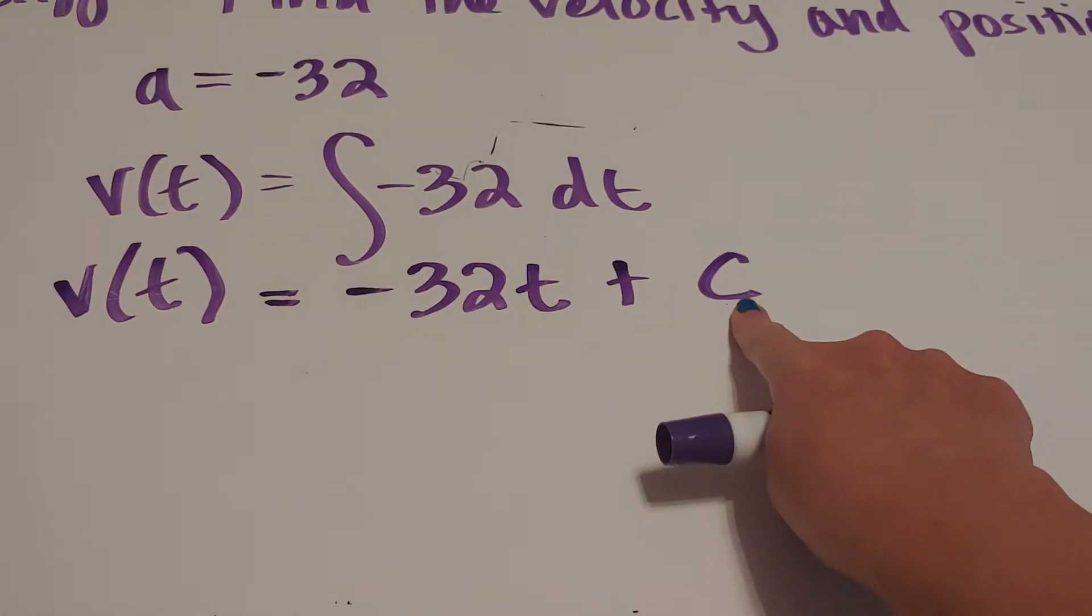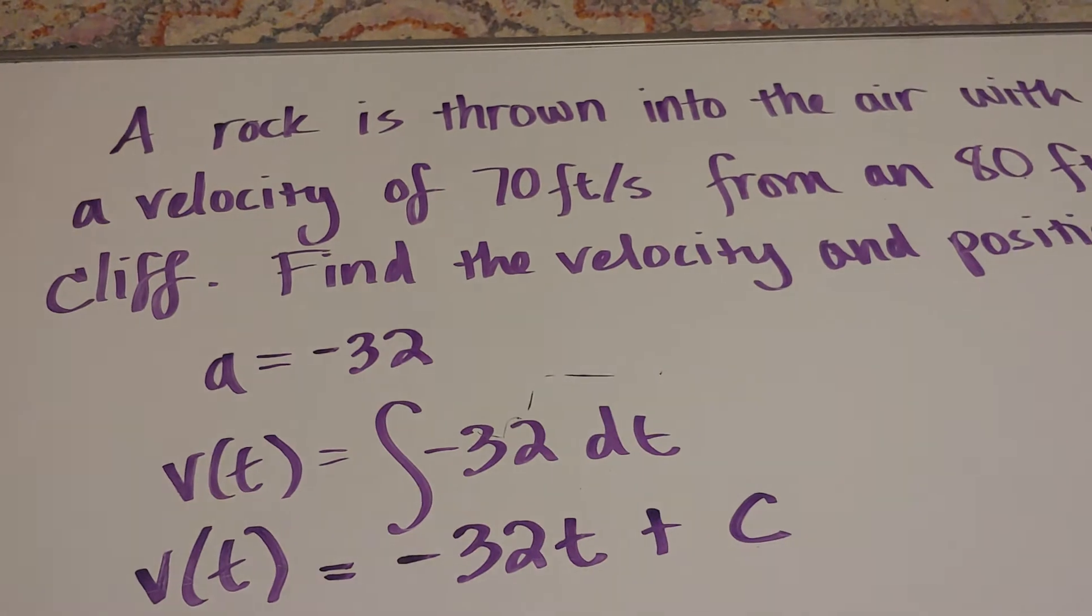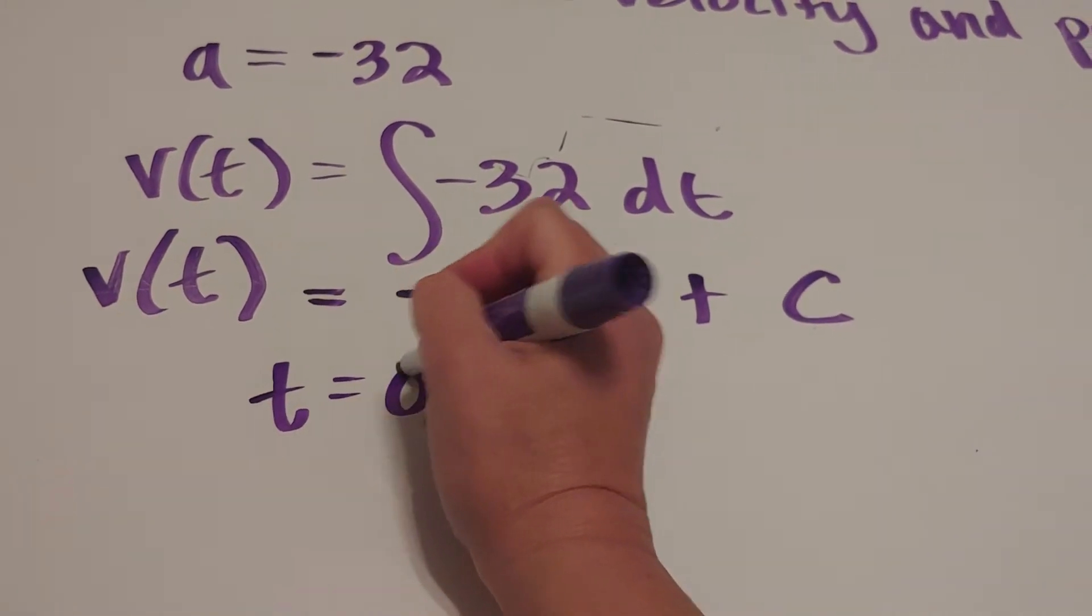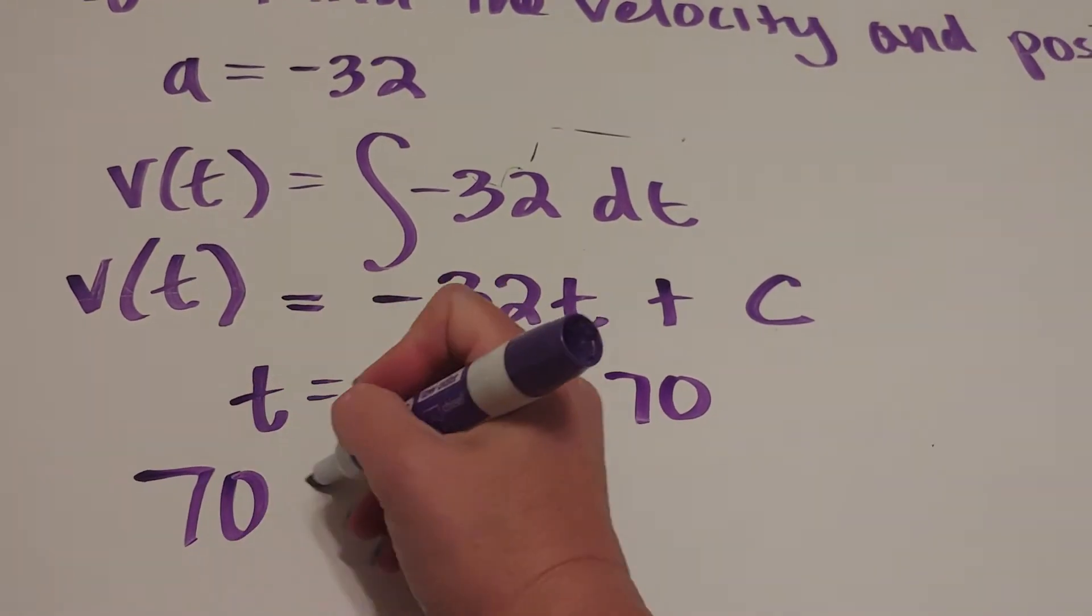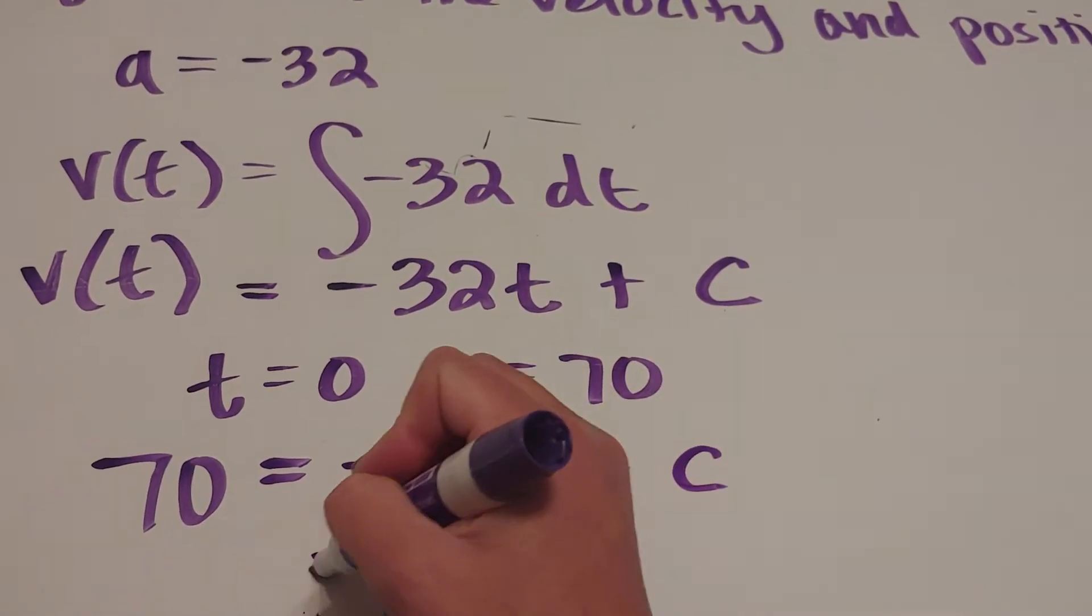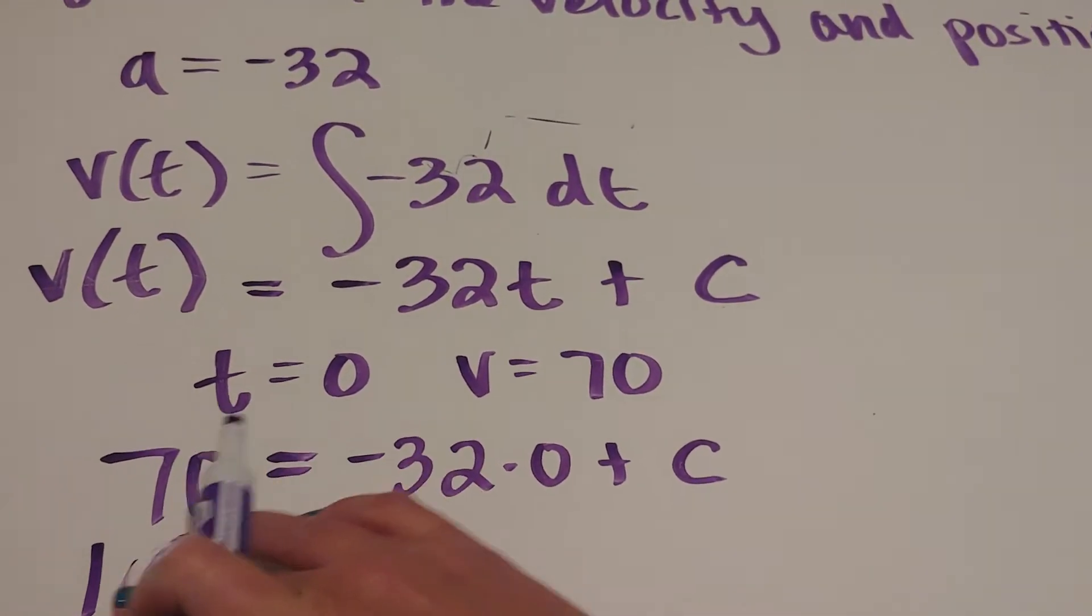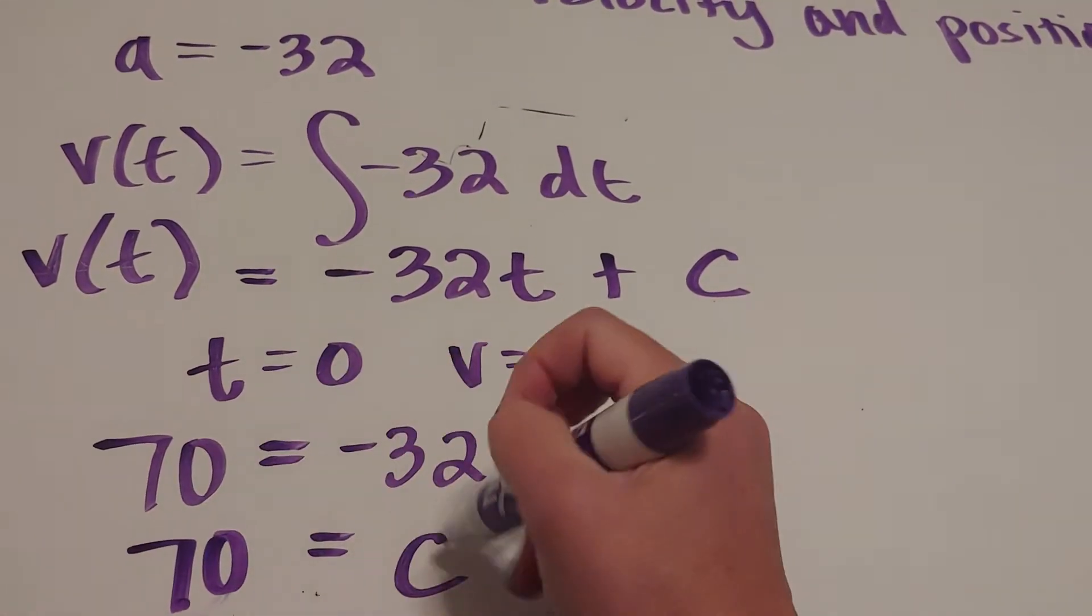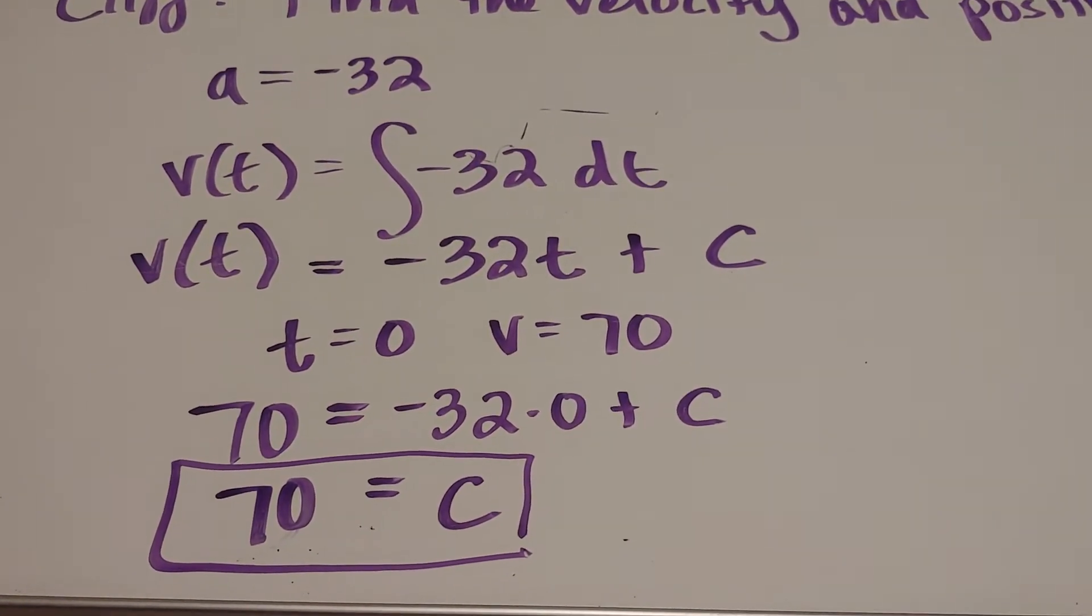Now the idea is that I can solve for the c because I was given a fact. What I was told is that I am throwing the rock in the air with a velocity of 70 feet per second. So what that means is that when t is zero, velocity is 70. So I'm going to put 70 equals negative 32 times zero plus c. And I believe - this is zero - 70. Even your teacher makes little mistakes, but I caught it.